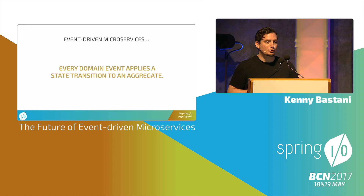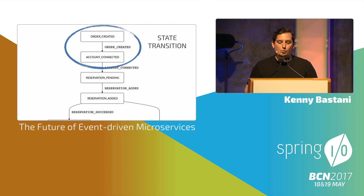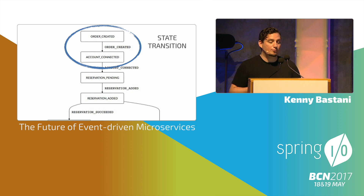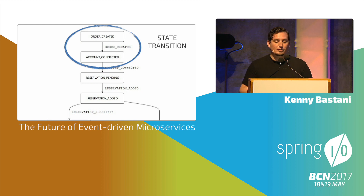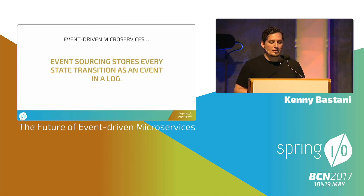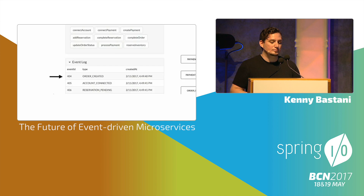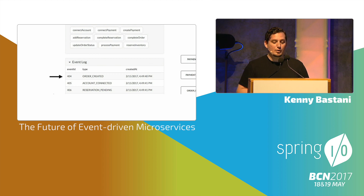Every domain event also applies a state transition to an aggregate. Here we have an order aggregate where an order is created, it looks for the order created event, and then it's handled by the account connected handler. Each one of these nodes in the graph is an event handler. Event handlers can generate commands, which can then generate events. Event sourcing stores every state transition as an event in a log, and you make that event log accessible to your developers via an API.